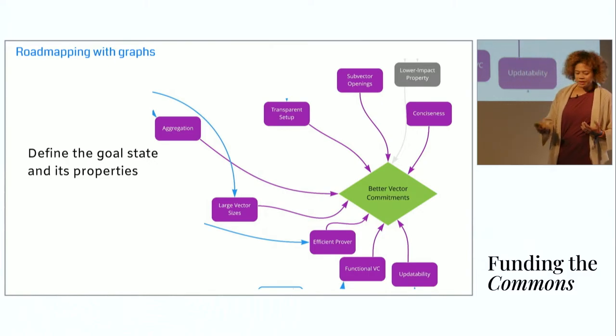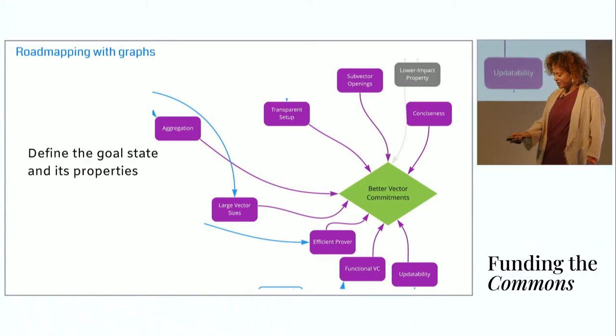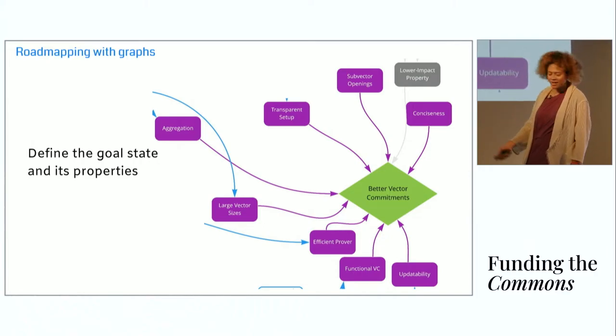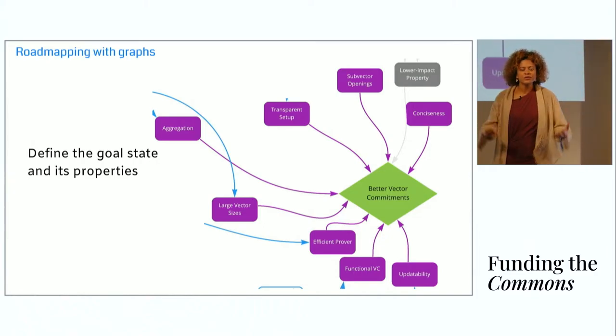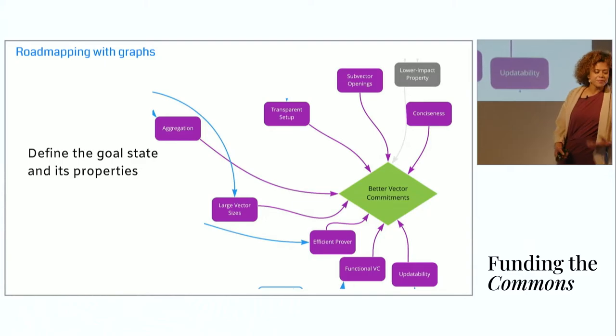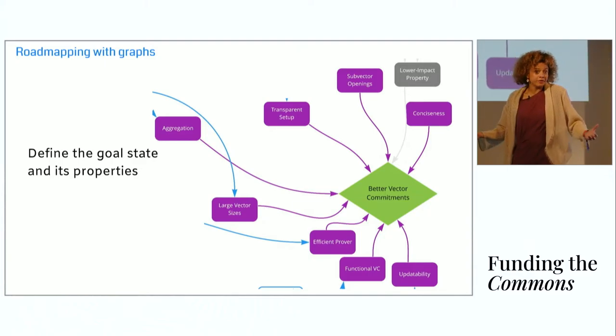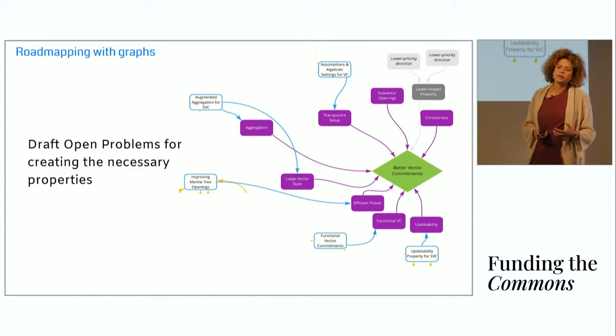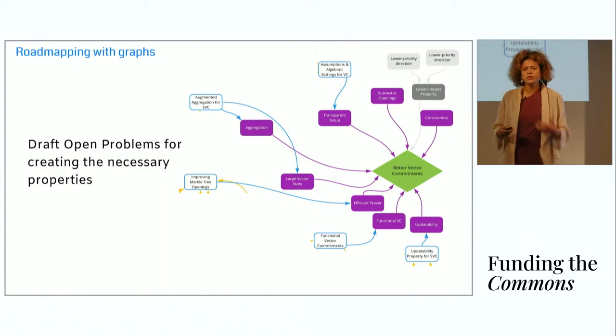The first step of building a research roadmap is to define the goal state and its properties. I have a laser pointer. I think any time you get a laser pointer, you should also have a conference cat. So you define what is your definition of success? How does the world look different or better when you're done? In this case, CryptoNet Lab wanted better vector commitments. Then they define the properties that constitute what is a better vector commitment. You can see those in the purple squares outside of the green triangle, the goal state. Then you draft open problems for creating the necessary properties. Those can be thought of as research projects that are necessary to address the properties that your future state needs to have. And then you might suggest potential directions for solving the open problems.